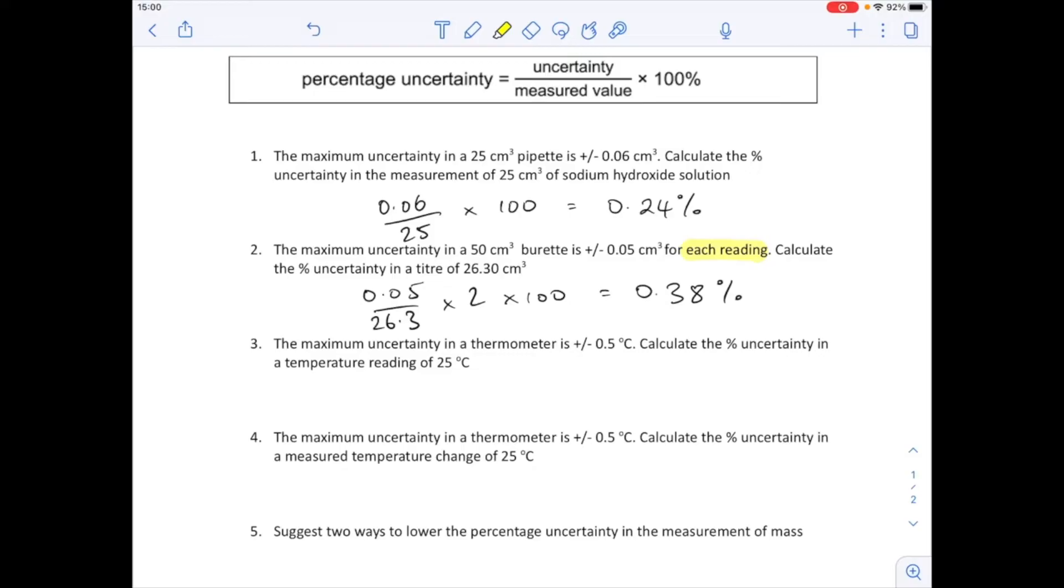Question three: calculate the percentage uncertainty in a temperature reading. So that's just a single reading from the thermometer. So that's literally just going to be 0.5 over 25 has been measured, times 100, which is 2%.